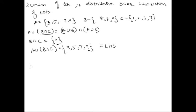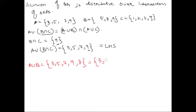Let's do A union B first. We list out A: {3, 5, 7, 9}, then list B without repeating anything — 5 and 9 are repeated but 8 is not, so we add 8. In ascending order: A union B = {3, 5, 7, 8, 9}.